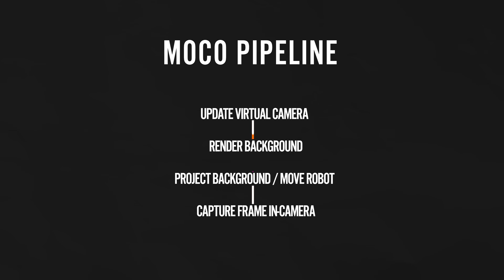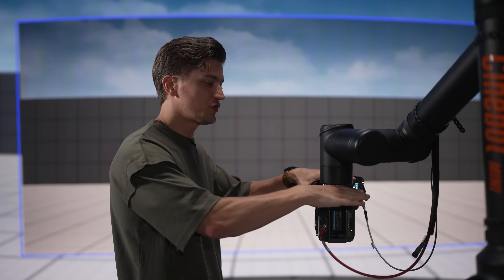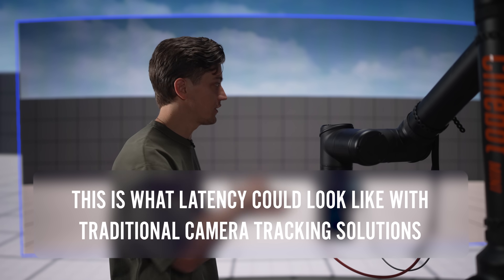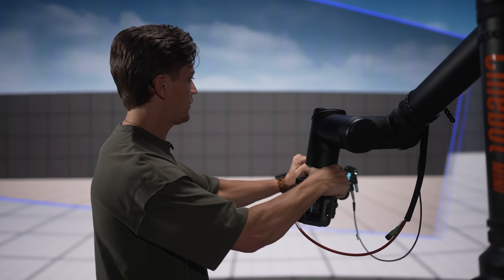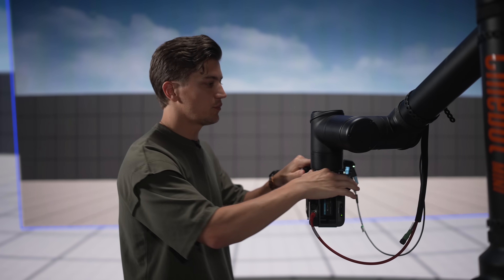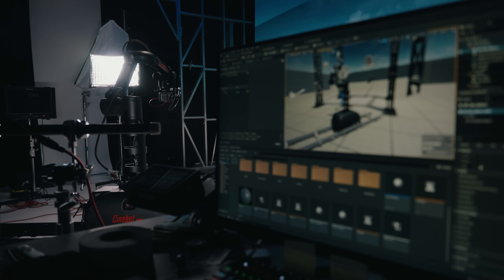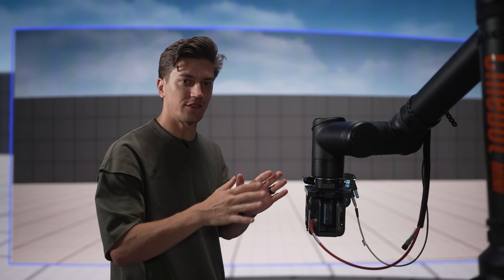MoCo solves this problem because it already knows where the camera is and where it will be, since it's literally just running a program that you get to design. Since I'm using push MoCo, the software doesn't know where I'm gonna be moving the camera, so you'll see there's a little bit of latency — the virtual camera moves behind the real one. This is what happens with the majority of tracking solutions, but once you've programmed the move and you're running it, you can send a delay to the physical robot to account for any latency and make sure they're nicely dialed.